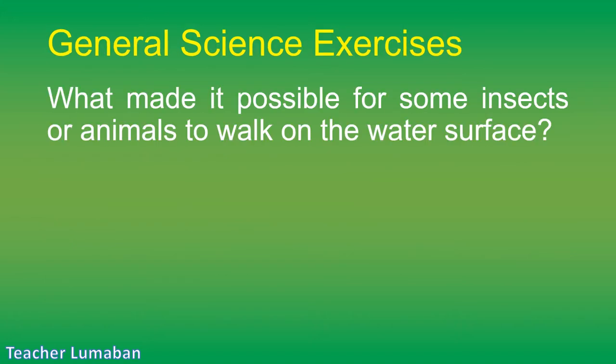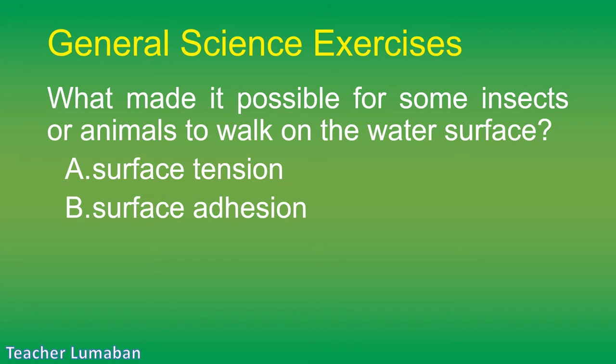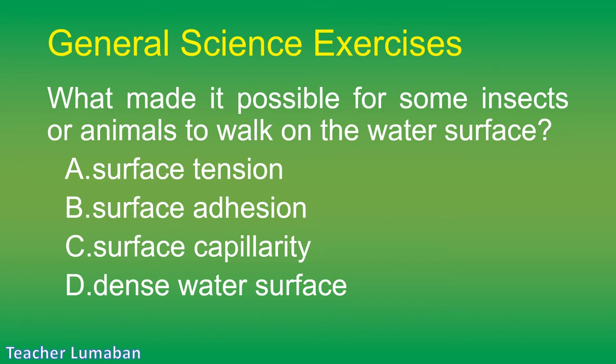What makes it possible for some insects or animals to walk on the water surface? Letter A: surface tension. Letter B: surface adhesion. Letter C: surface capillarity. Letter D: dense water surface.